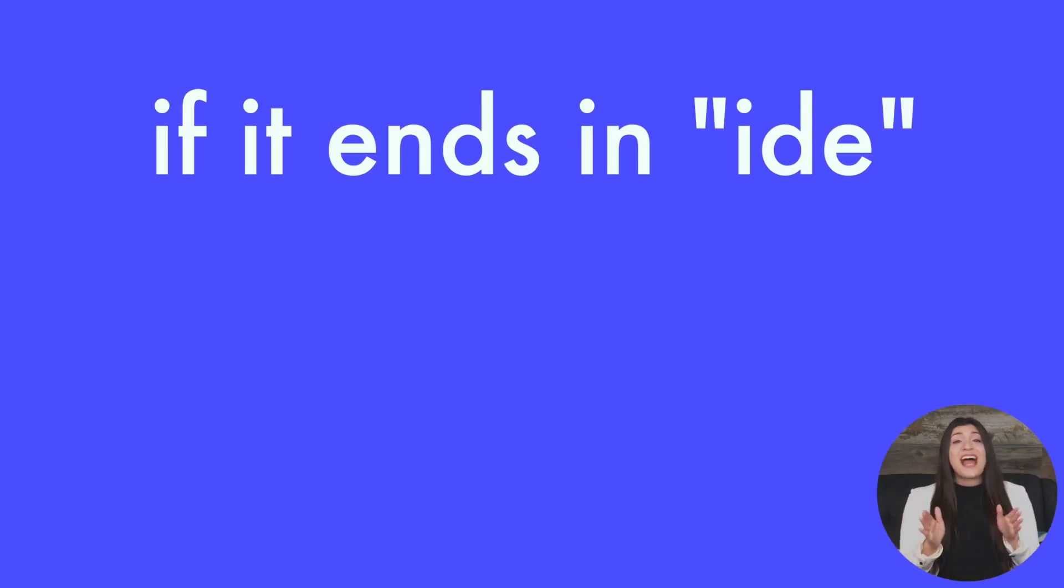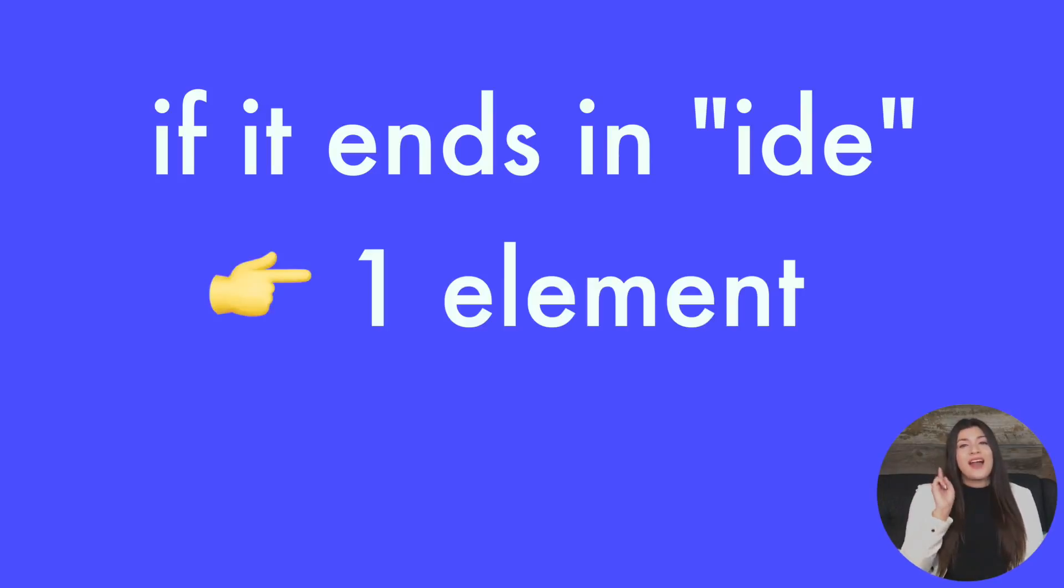For naming ionic compounds, which consist of a metal and a non-metal, the ending of the non-metal tells you so much. If it ends in "-ide," that means it's only one element.